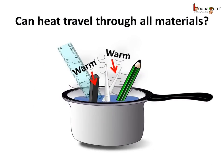Now, let us see — can heat travel through all solid objects? Let us take a pot of hot water and put one end of an iron bar, a plastic scale, a wooden pencil, and a pair of stainless steel scissors in the pot. After a few minutes, if we touch the ends of each object which is outside the water, this end of the iron bar is warm, even though it is not touching the hot water. Which means heat has transferred from one end to the other end of the iron bar.